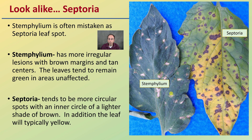Stemophilium is often mistaken for septoria leaf spot, especially early on. Stemophilium has more irregular lesions with brown margins and tan centers, and the leaves tend to remain green in unaffected areas. In contrast, septoria tends to produce more circular spots with an inner circle of a lighter shade of brown, and the leaf will typically yellow around those spots. A useful comparison to keep in mind when making a field diagnosis.